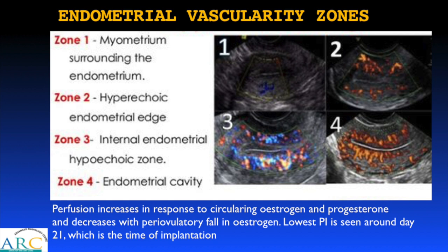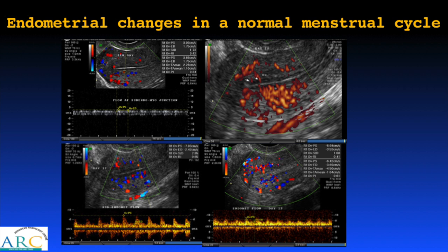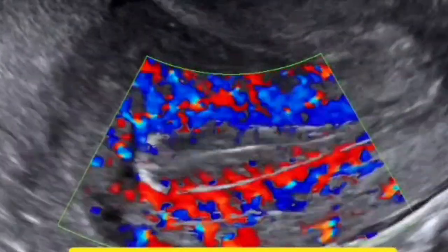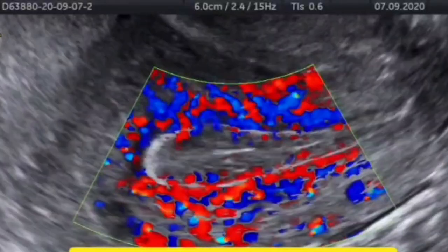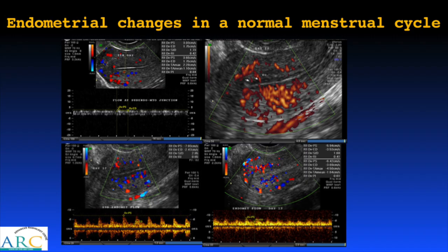The lowest PI is seen around day 21, which is the time of implantation. In the early proliferative stage, vascularity is seen in the myometrium and resistance progressively decreases. By the mid-follicular stage around day 12, vascularity reaches Zone 2 with an RI of about 0.6. Around ovulation, blood flow extends to Zone 4 with an RI of about 0.4.